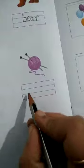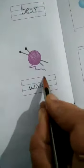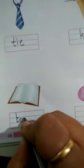This is wool, W-double O-L, wool. This is book, B-double O-K, book. Soap, S-O-A-P.